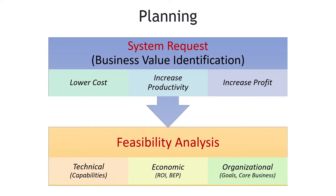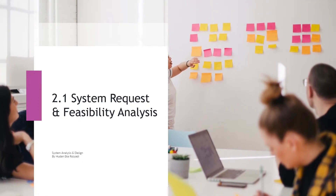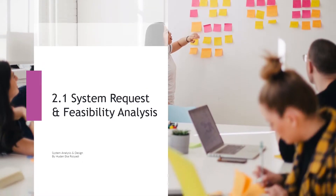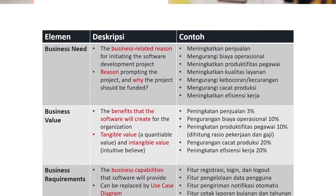Setelah kita sudah buat system request-nya, selanjutnya ada analisis kelayakan ini. Kita analisis layak tidak secara teknis, layak tidak secara ekonomi, dan layak tidak secara organisasi. Sekarang kita akan membahas tentang system request dan feasibility analysis. Di system request ini ada tiga hal yang terpenting: yaitu business need, ada business value, dan ada business requirements.